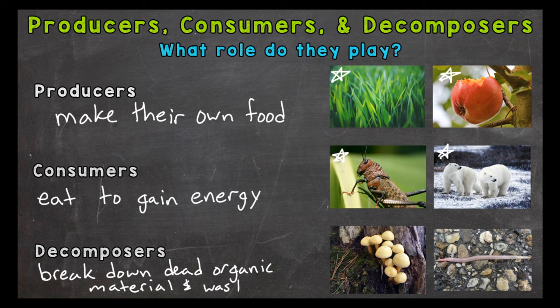If something dies, produces waste, or maybe even a tree loses a leaf, decomposers are the ones to break down the nutrients and return them to the soil. Although decomposers play a critical role in ecosystems, they aren't always shown in food chains or food webs. That's okay though, because we know how important they are. Our examples are some mushrooms and an earthworm.